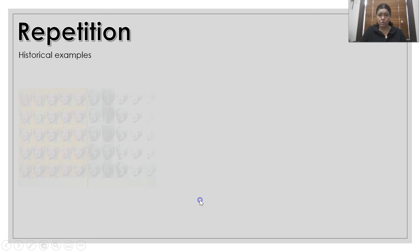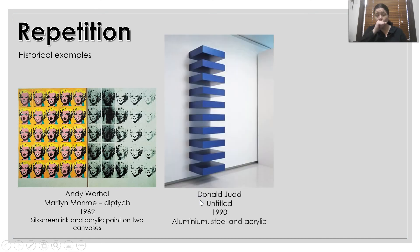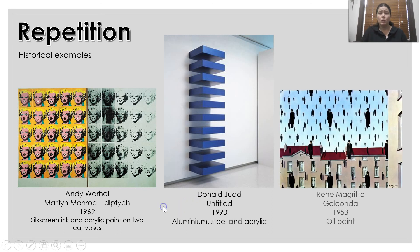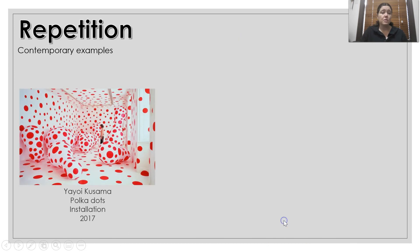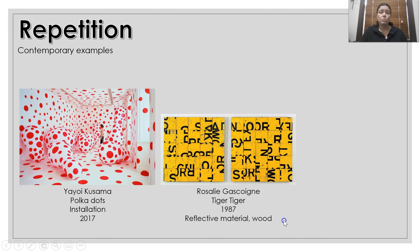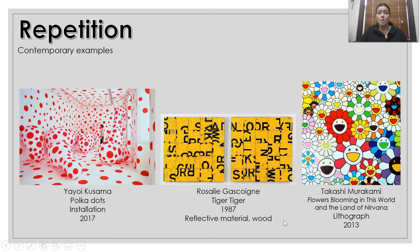Some historical examples of repetition. You can see with the Warhol work — obviously having that many Marilyn Monroes, he's repeating the same imagery. Even with Judd's sculpture, he's repeating the same shape, and Magritte is also repeating the same form. Some contemporary examples of repetition — they're all using repetition in different ways: the repetition of the flower, or the dots, or the shape of the raw material.